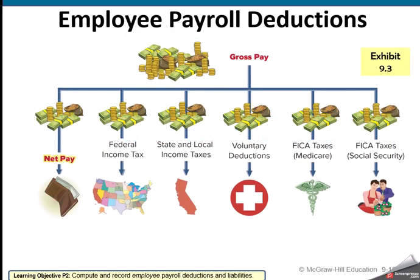Payroll liabilities — this is where it gets a little tricky because there are so many different ones. We start off with gross pay, and then everything that gets deducted goes into a separate payable account: federal income tax, state income tax, possibly local income tax, and then voluntary deductions.